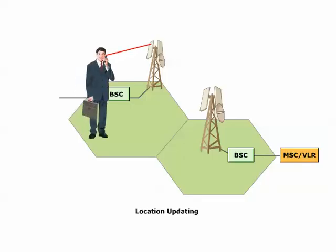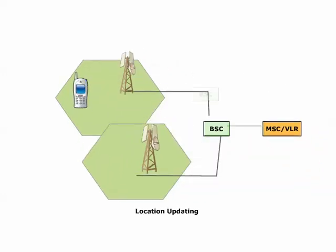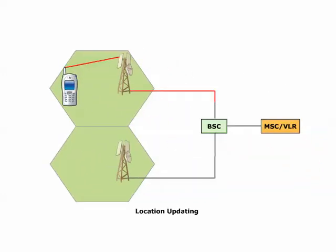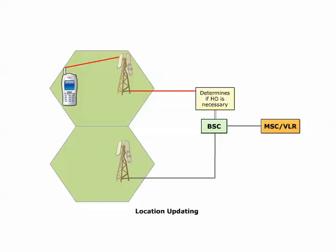During the call, the MS measures the signal strength and quality on its own TCH and the signal strength of neighboring cells, evaluating the average value for each. Approximately twice per second, the MS sends a measurement report to the BTS with measurements from the serving cell and the best neighboring cells. The BTS adds its own measurements made on the TCH uplink and forwards the report to the BSC. In the BSC, the locating function determines if it is necessary to hand over the call to another cell because of poor quality or low signal strength in the serving cell.